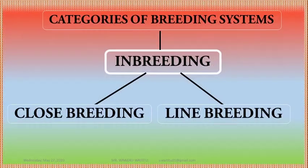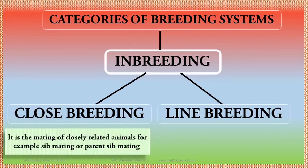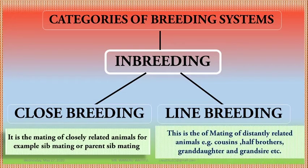There are two ways in which inbreeding is achieved: number one, through close breeding, and number two, through line breeding. Close breeding is defined as the mating of closely related animals — for example, sib mating or parent-sib mating. Line breeding, on the other hand, is the mating of distantly related animals — for example, cousin and cousin, half-brother and half-sister, or grandsire and granddaughters.